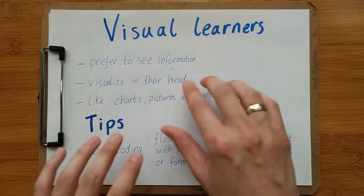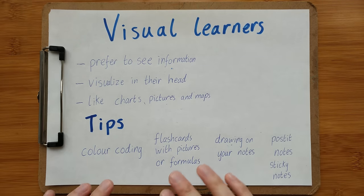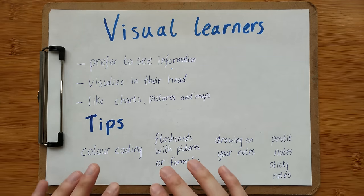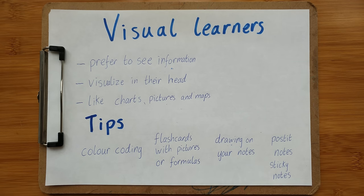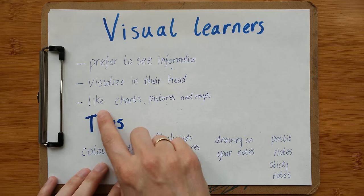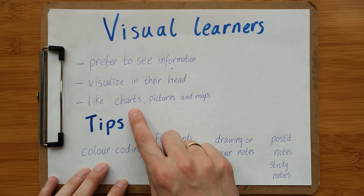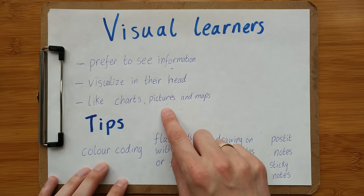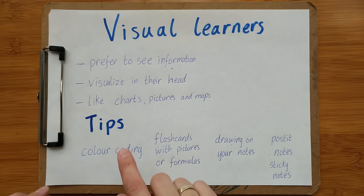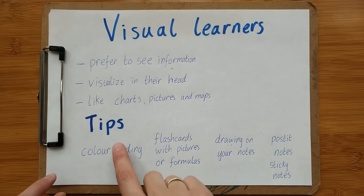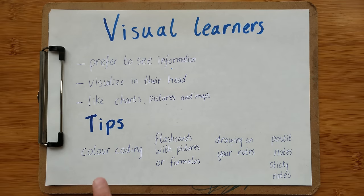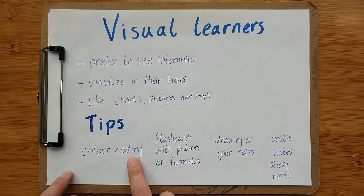The first one we're going to look at is visual learners. They prefer to see the information and visualize it in their heads, thinking about the relationships and the ideas. This kind of learner likes charts, pictures, and maps. Let's look at some tips for visual learners.